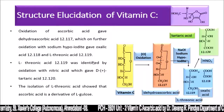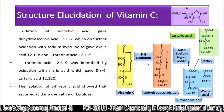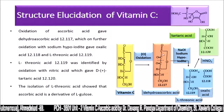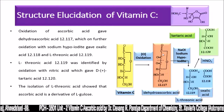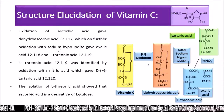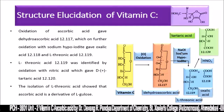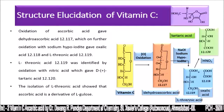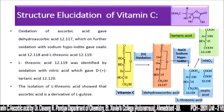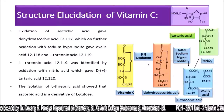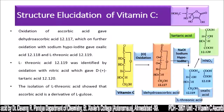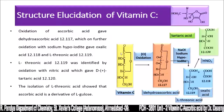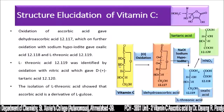Oxidation of ascorbic acid gave dihydroascorbic acid. Further oxidation with sodium hypoiodide gives oxalic acid and L-threonic acid. L-threonic acid on treating with HNO3 gives tartaric acid, indicating that this compound is a derivative of L-glucose.